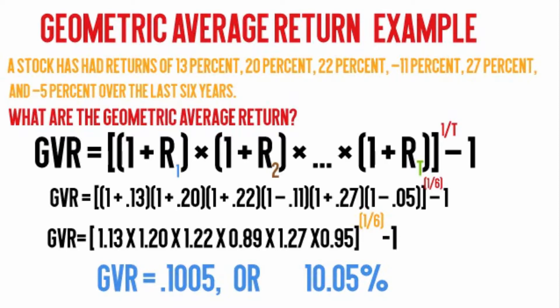Step 3: take the result from step 2 and raise it to the power of 1 over 6. Step 4: finally, subtract 1 from the result of step 3. The result is the geometric average return 10.05%. One important point.